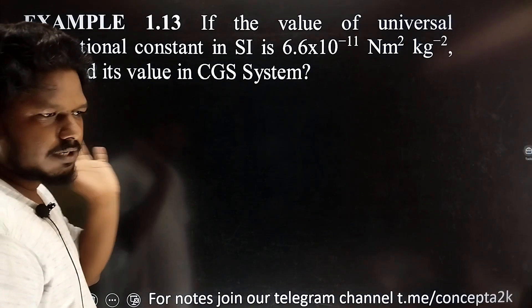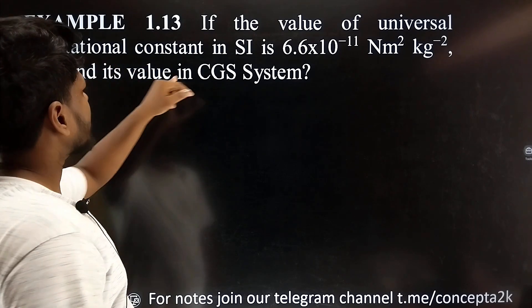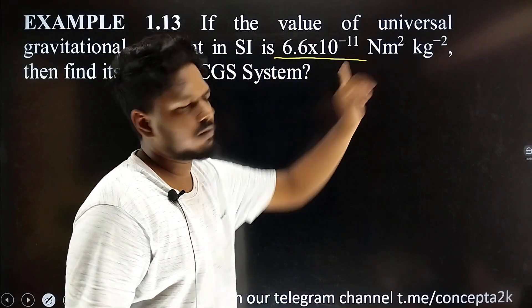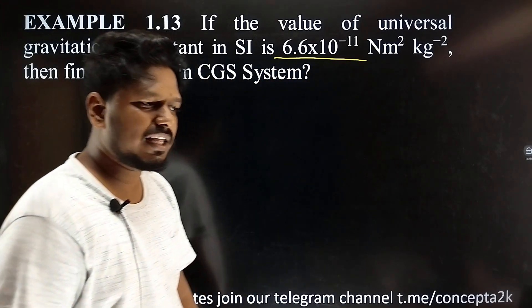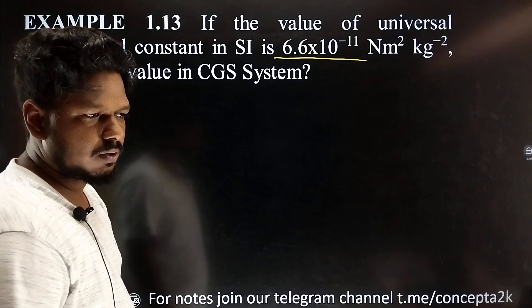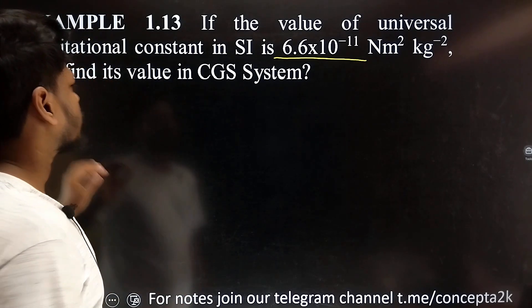Example 13: If the value of the universal gravitation constant is given in SI units, we will convert it to CGS units.